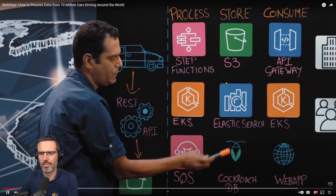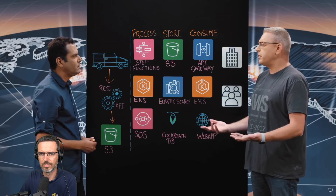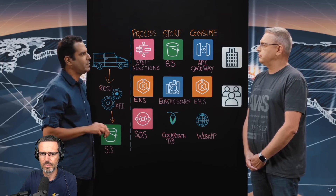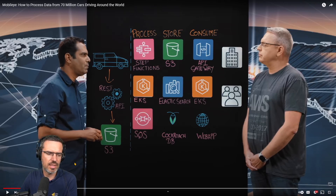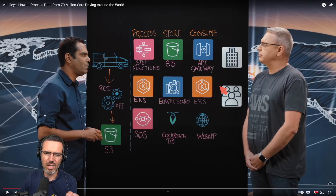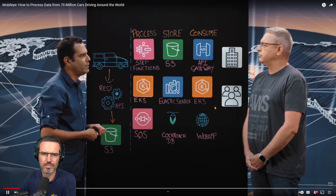The store layer is composed of S3, Elasticsearch, and CockroachDB. Platform insights are then exposed to customers via the consume layer. Dynamic RAM has multiple customer types — for example, road and city planners and operators. City planners are going to look at statistics and general analytics data, not at individual cars. That's where the web apps come into play, where someone from a city can go in and look at aggregated data.